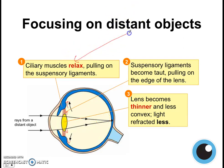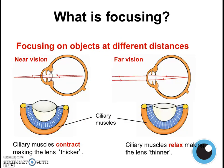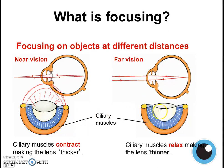For a distant object, your ciliary muscles will relax — looking at distant objects helps rest your eyes. To summarize: for near vision, your ciliary muscles contract, bunch up more, and the suspensory ligaments become slack, causing the lens to be thicker. For far vision, the ciliary muscles relax, move away from the lens, the suspensory ligaments become taut, and the lens becomes thinner and less convex.